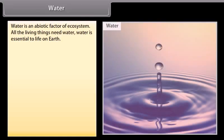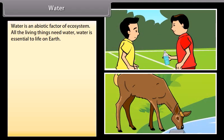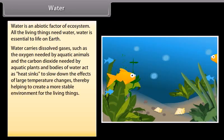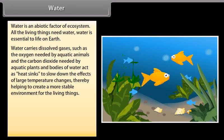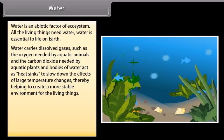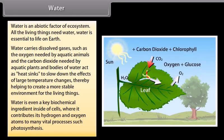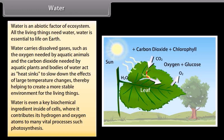Water is an abiotic factor of the ecosystem. All living things need water; it is essential to life on earth. Water carries dissolved gases such as the oxygen needed by aquatic animals and the carbon dioxide needed by aquatic plants. Bodies of water act as heat sinks to slow down the effects of large temperature changes, helping to create a stable environment for living things. Water is also a key biochemical ingredient inside cells, contributing hydrogen and oxygen atoms to vital processes such as photosynthesis.